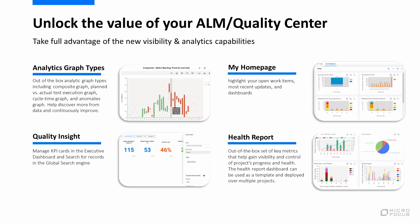By default, the My Homepage module will be displayed after logging into ALM. And the Health Report is an out-of-the-box dashboard that includes a set of key metrics that help you track project status, and it can be used as a template for multiple projects.